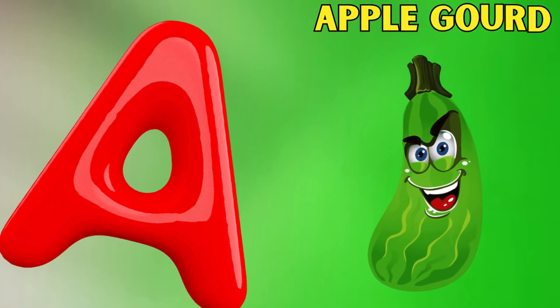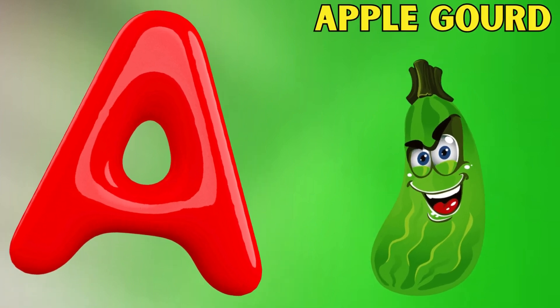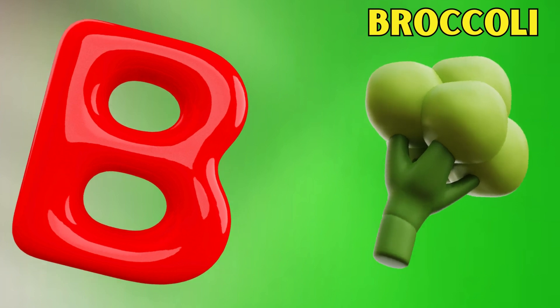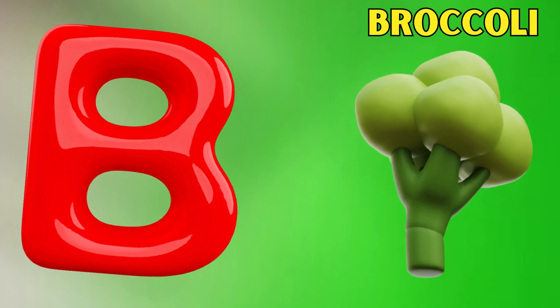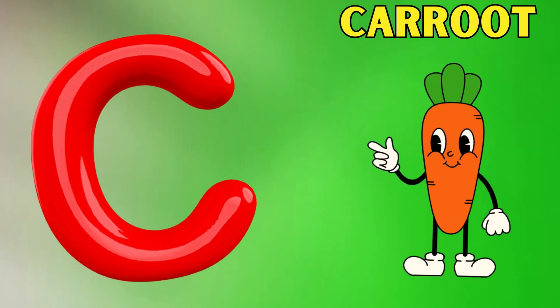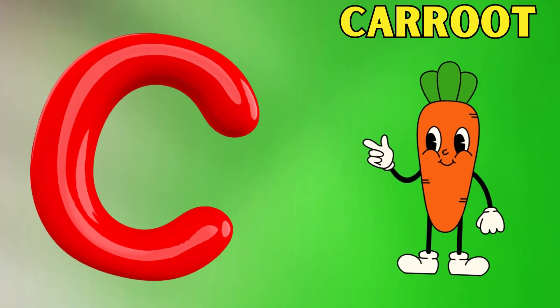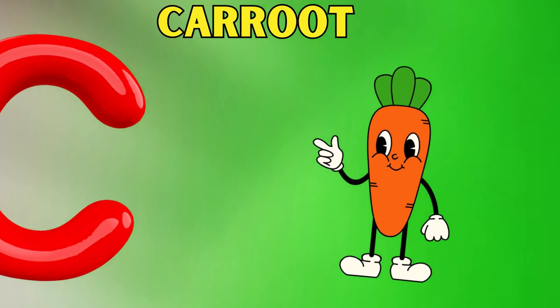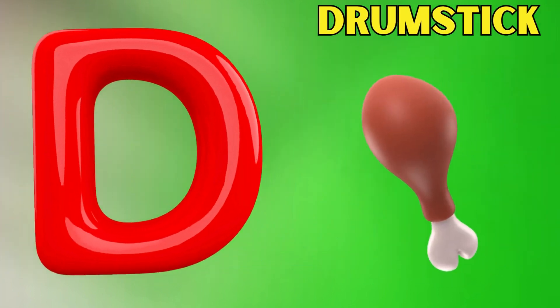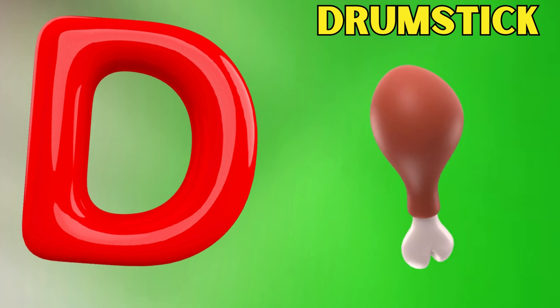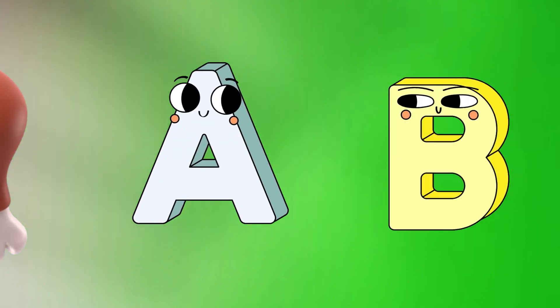A is for apple gourd. B is for broccoli. C is for carrot. D is for drumstick.